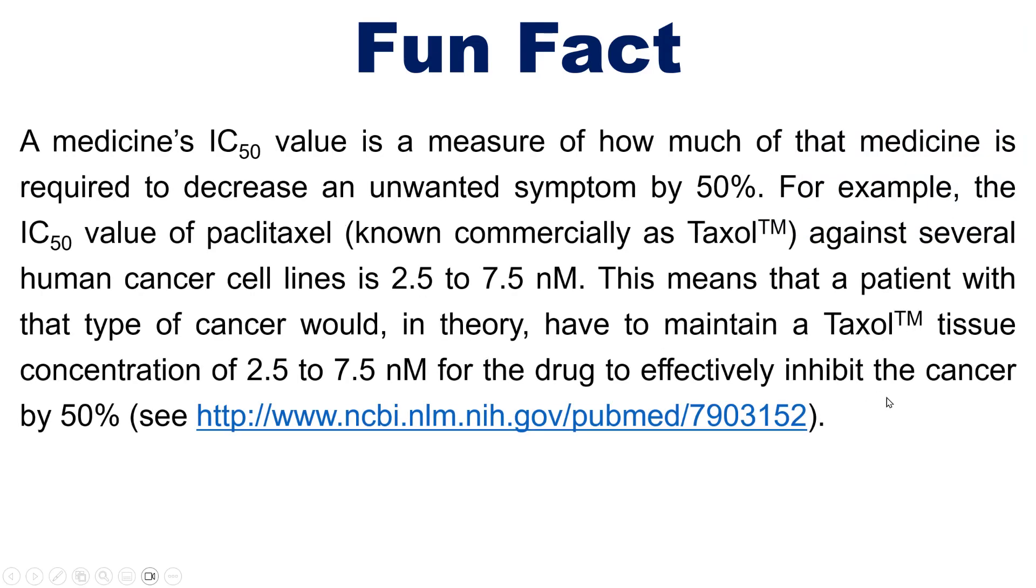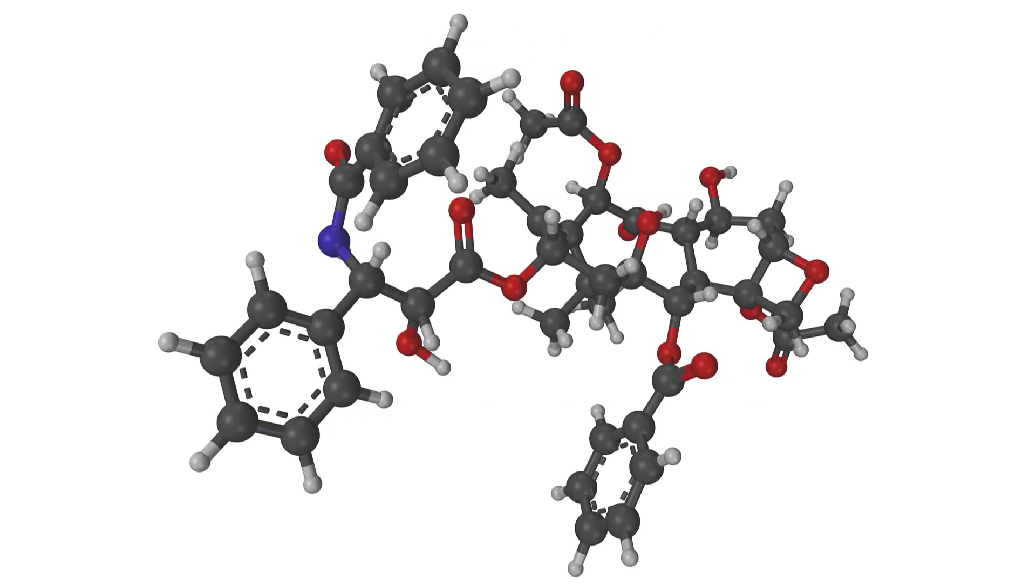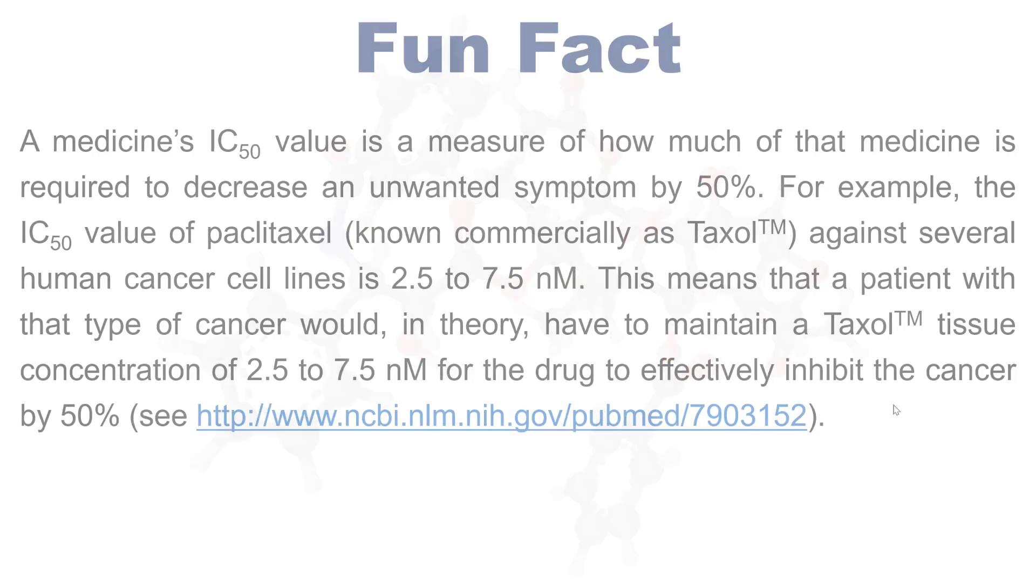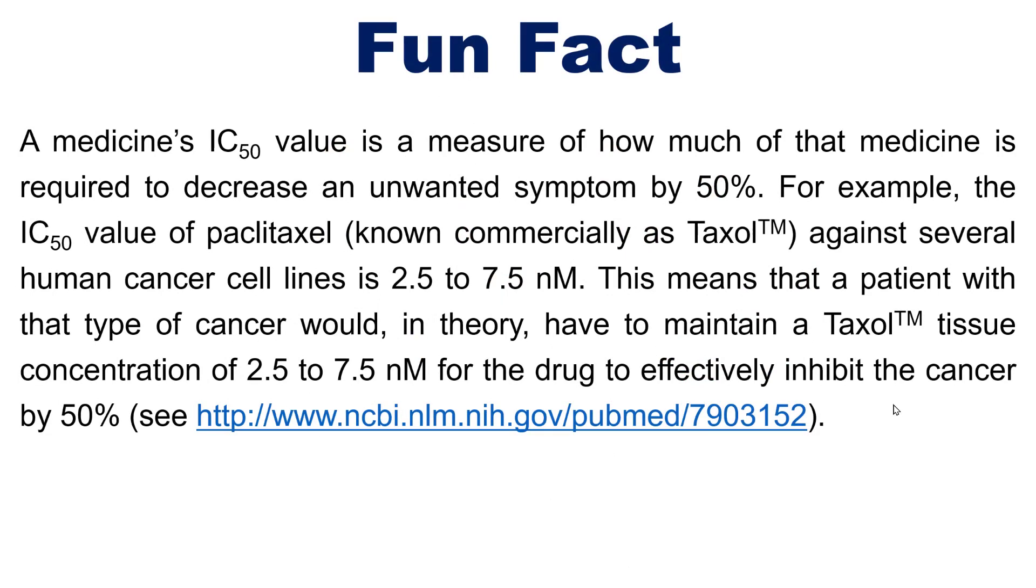A medicine's IC50 value is a measure of how much of that medicine is required to decrease an unwanted symptom by 50%. For example, the IC50 value of paclitaxel, known commercially as Taxol, against several human cancer cell lines is 2.5 to 7.5 nanomolar. This means that a patient with that type of cancer would in theory have to maintain a Taxol tissue concentration of 2.5 to 7.5 nanomoles per liter for that drug to effectively inhibit the cancer by 50%.